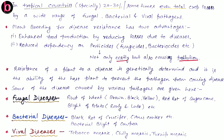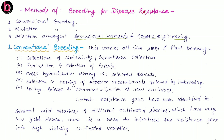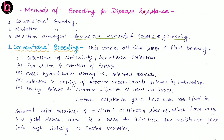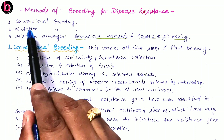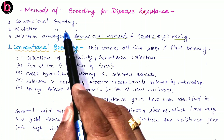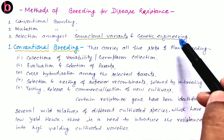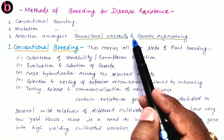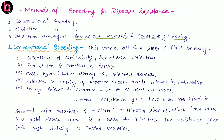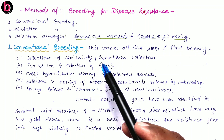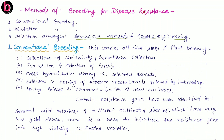Beside these, there are many more diseases caused by fungus, bacteria, and viruses in plants. There are three methods by which we can create disease resistance in a plant: first, conventional breeding method; second, mutation breeding method; and third, selection method — including selection among somaclonal variants as well as by genetic engineering. Genetic engineering is covered in the biotechnology section. Now, about conventional breeding: this carries all five steps of plant breeding as discussed earlier.